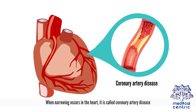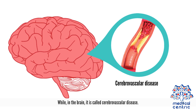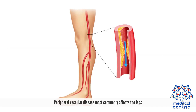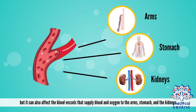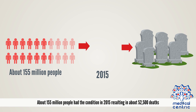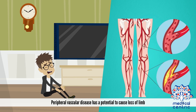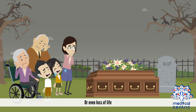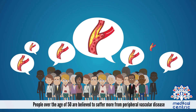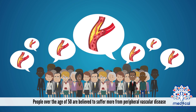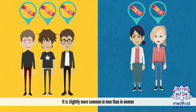When narrowing occurs in the heart, it is called coronary artery disease, while in the brain, it is called cerebrovascular disease. Peripheral vascular disease most commonly affects the legs, but it can also affect the blood vessels that supply blood and oxygen to the arms, stomach, and kidneys. About 155 million people had the condition in 2015, resulting in about 52,500 deaths. PVD has a potential to cause loss of limb or even loss of life. People over the age of 50 are believed to suffer more from PVD, and it is slightly more common in men than in women.